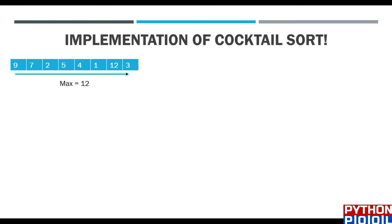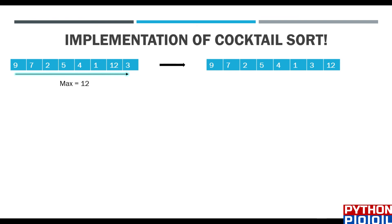This was our list initially. We go for the forward process and find the maximum element, which is 12. We try to put it in the rightmost part of the list. In the next step, we swap 3 and 12. Now for the backward process, 12 is excluded because the largest element is already at the rightmost sorted position.